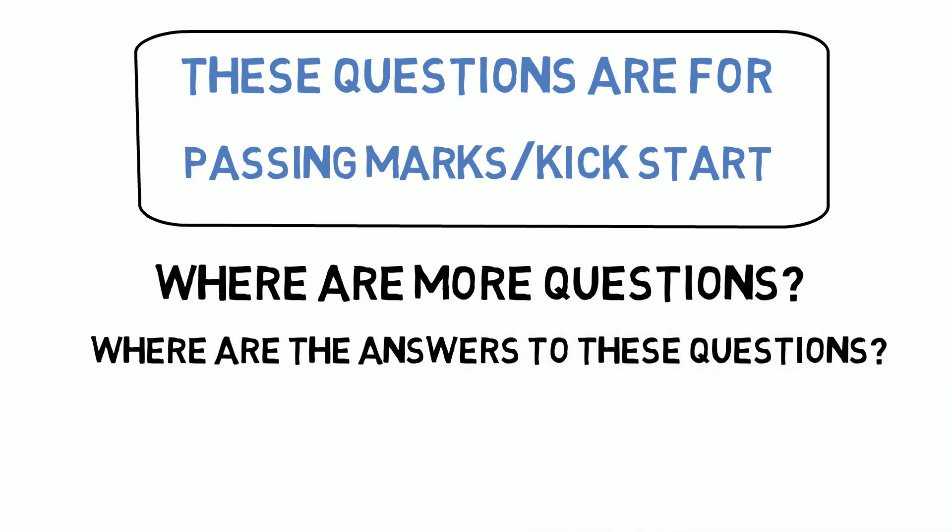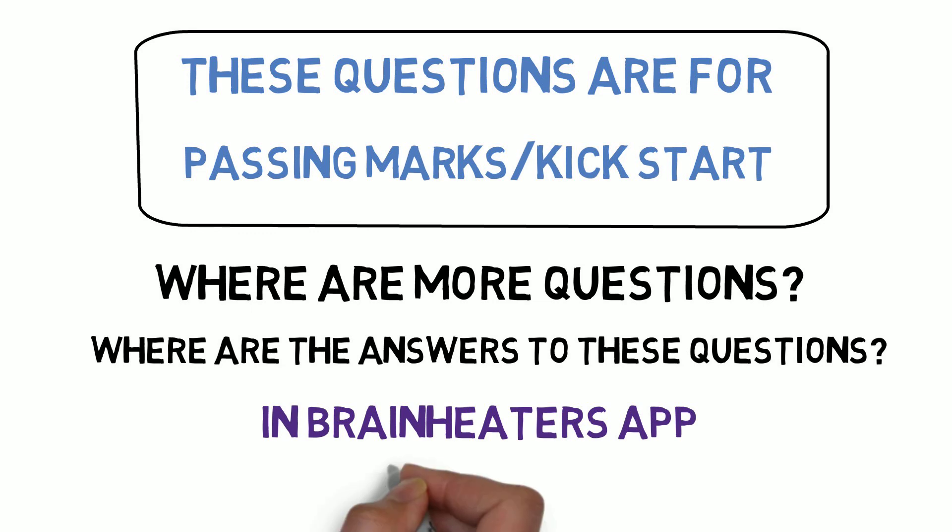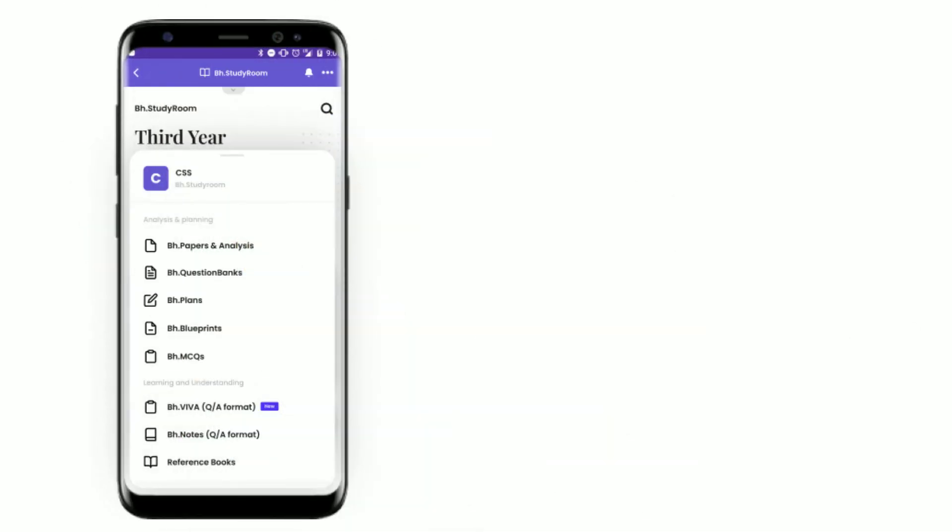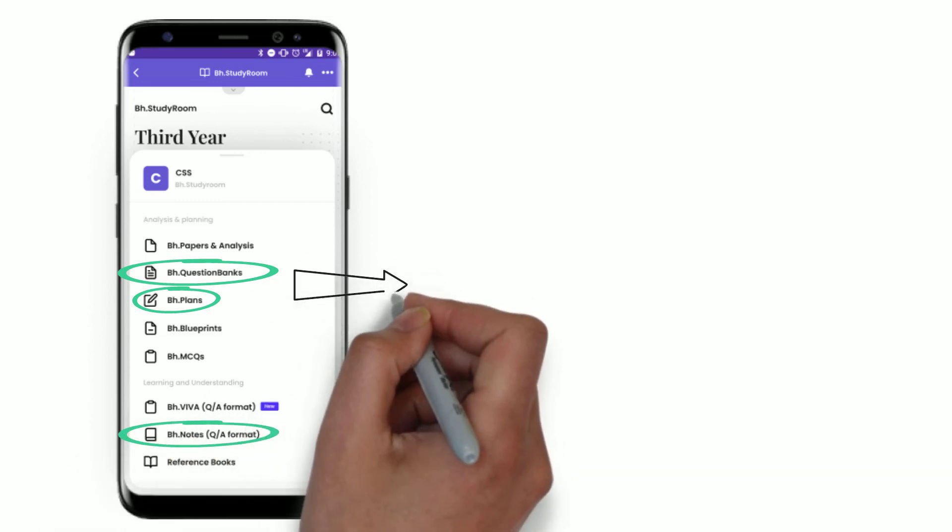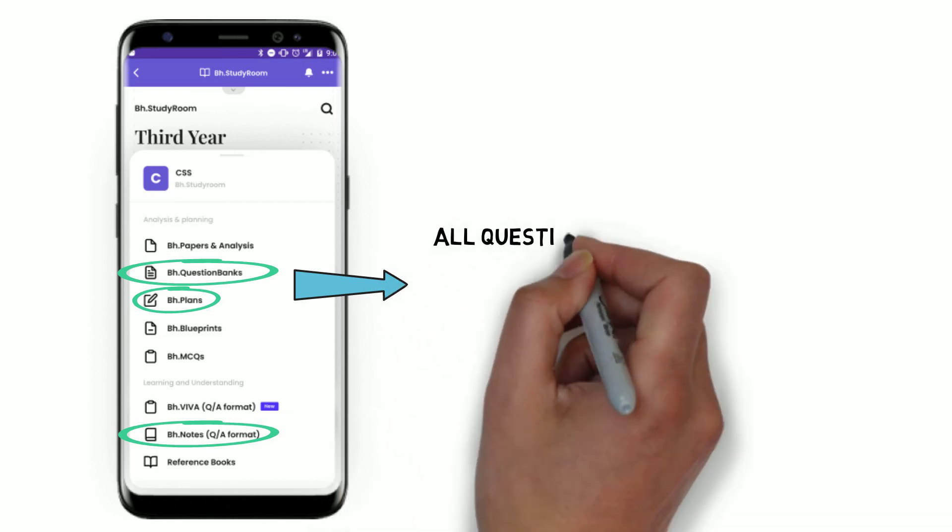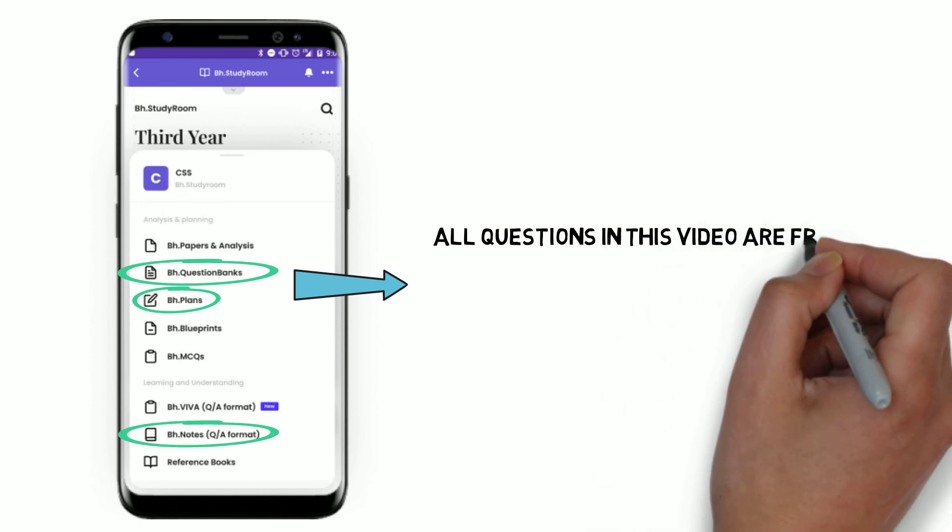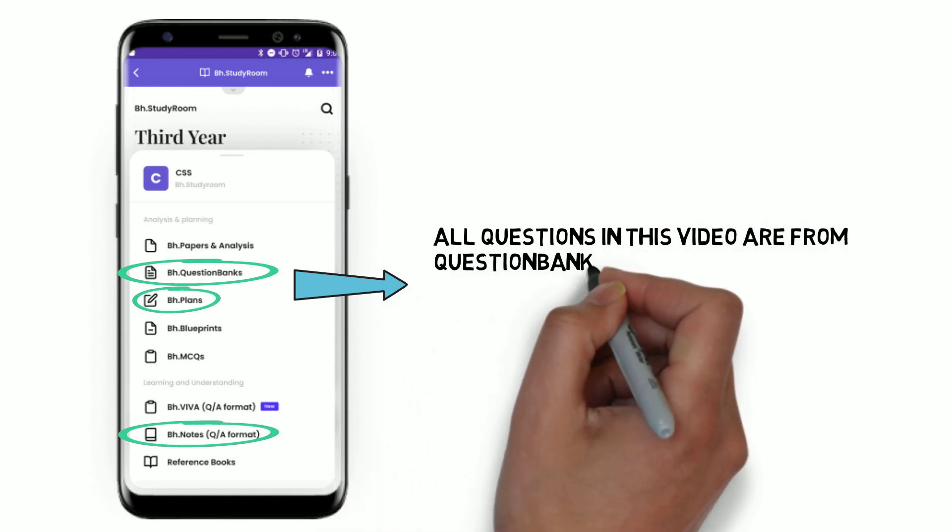If you're wondering where you will get more questions, we have already uploaded all the questions in the BrainHeaters plans. You will get three plans depending on your aim. You can do passing marks, average marks, or scoring questions. These are already available in BH notes. Once you're done with the BH plans, go to the BH question banks. You'll get module-wise questions, how to do chapter 1, chapter 2, chapter 3 - a proper count is available there. Check that as well.